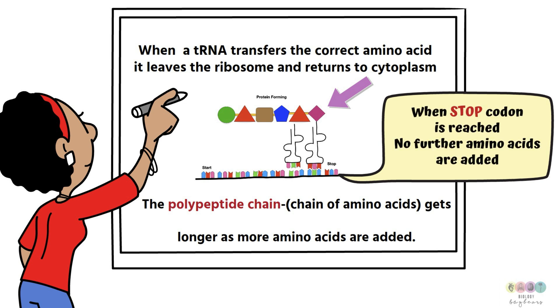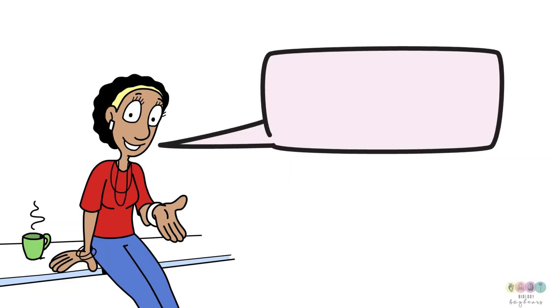When a stop codon is reached, no further amino acids are added and the process ends. Translation has finished and now it's protein folding, the final stage.